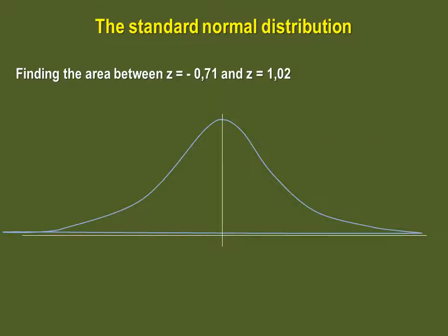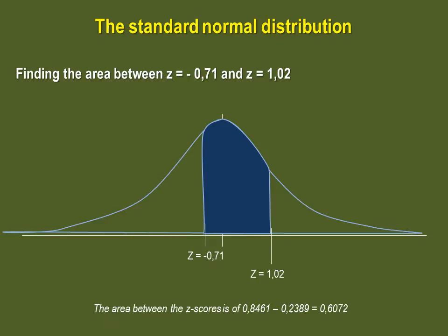Pause the video and try to find the area between Z-score minus 0.71 and Z-score 1.02. If you did this correctly, you should end up with a final area of 0.6072.